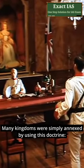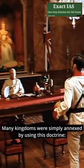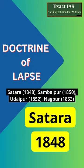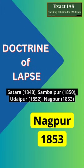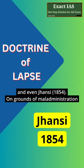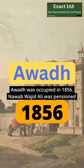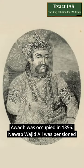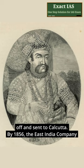Many kingdoms were simply annexed by using this doctrine — Satara, Sambalpur, Udaipur, Nagpur, and even Jhansi. On grounds of mal-administration, Awadh was occupied in 1856. Nawab Wajid Ali Shah was pensioned off and sent to Kolkata.